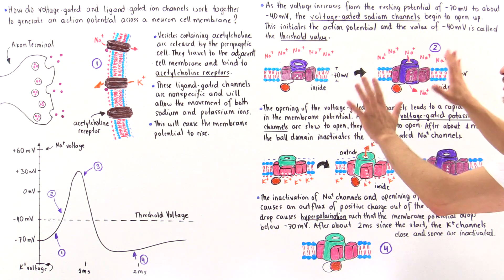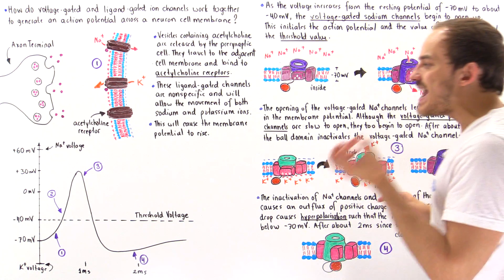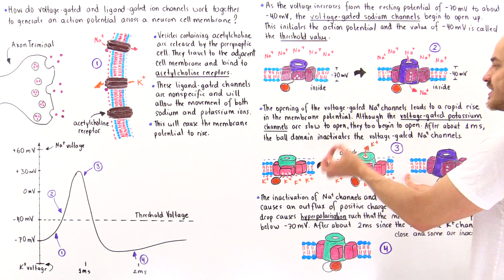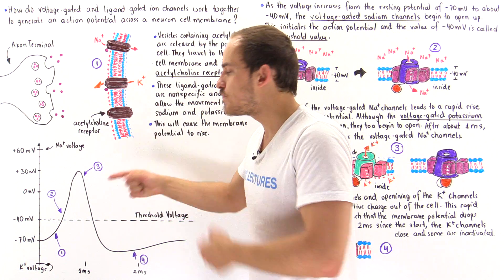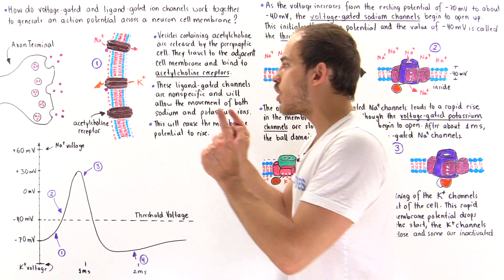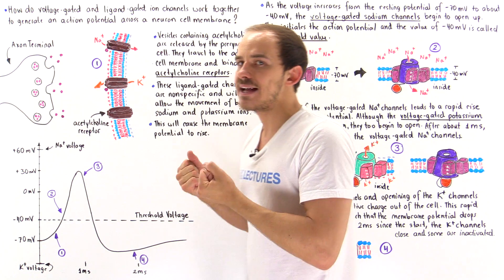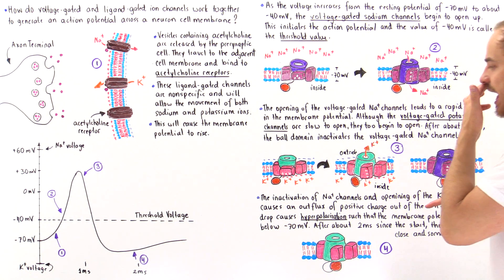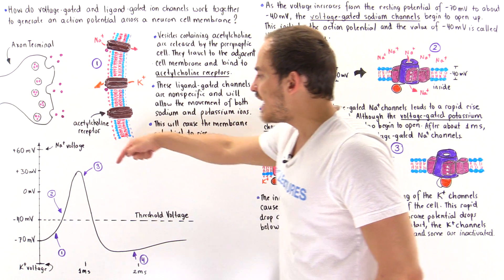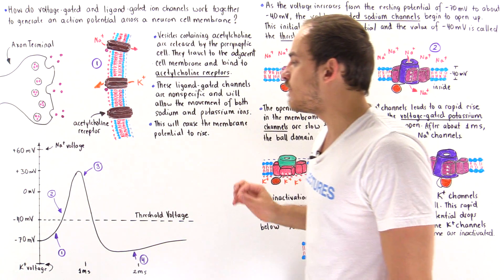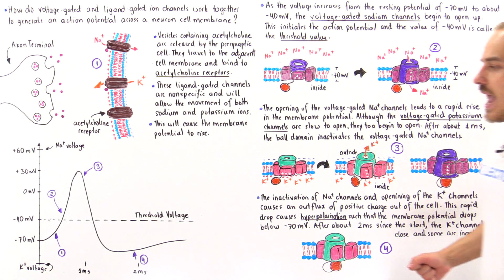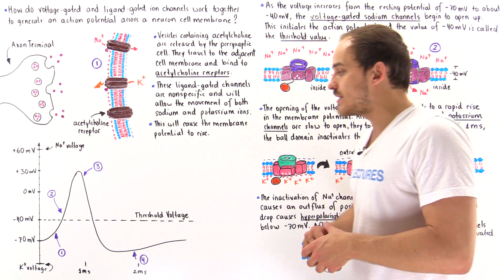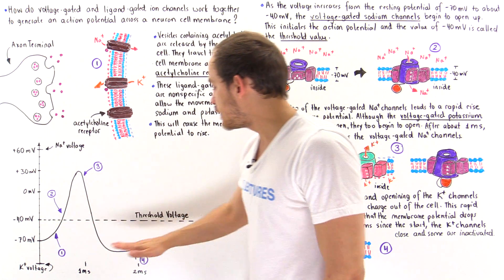At the same exact time, the voltage-gated potassium channels that were slow to open now open much faster. Because the sodium channels are closing and the potassium voltage-gated channels are opening, positive charge begins to move out of the cell. This is repolarization — as the charge moves out, the inside of the membrane becomes negatively charged again. Because of the inactivation of sodium voltage-gated channels and activation of potassium voltage-gated channels, the membrane potential drops below negative 70 millivolts into the hyperpolarization period. The potassium channels then close and in some cases become inactivated, helping return the voltage to normal.